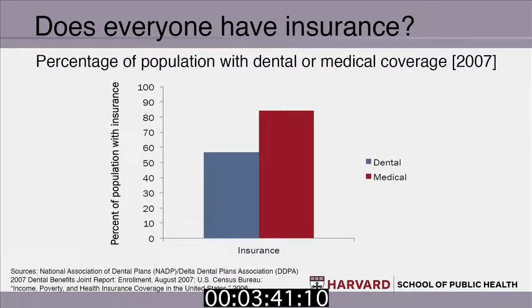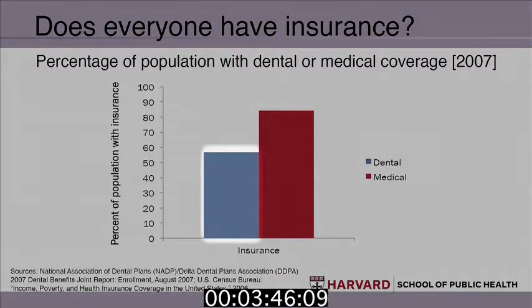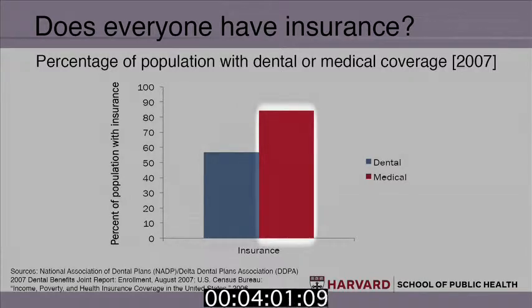How does the population fare with regard to insurance coverage between health professions? Approximately 60% of the total population has dental health coverage, which actually seems pretty good, but let's put this into perspective by comparing it to the percent of the total population with medical health coverage. Eighty-four percent of the total population has medical coverage. In other words, for every one person without medical insurance, there are approximately three people without dental insurance.